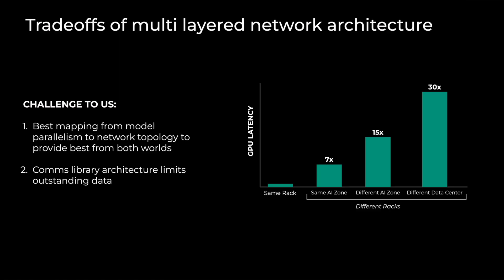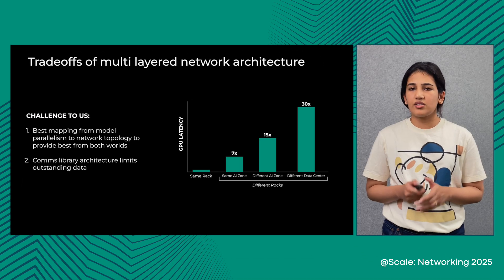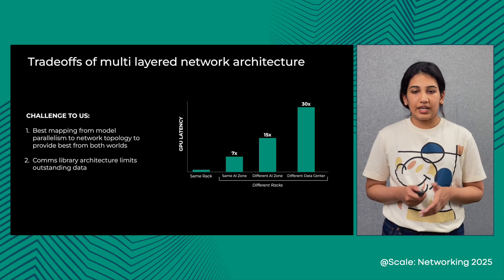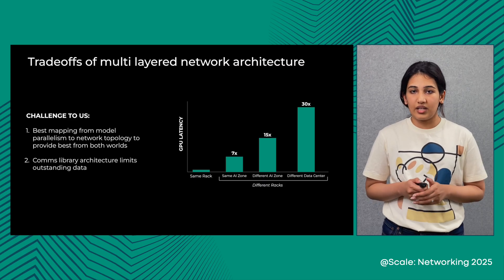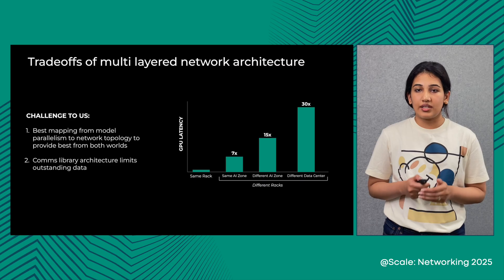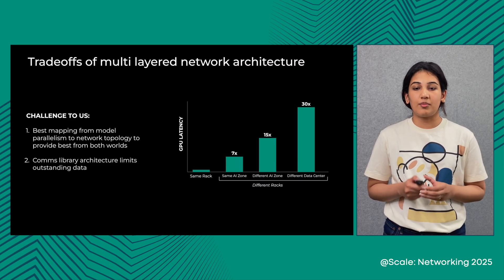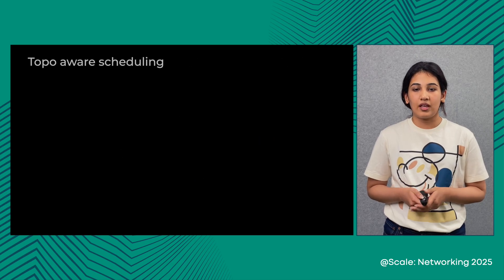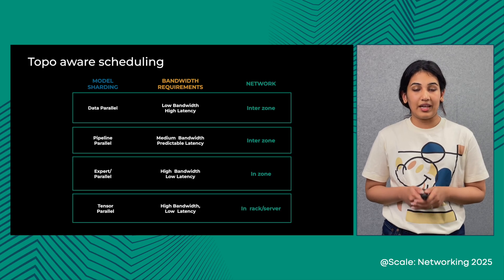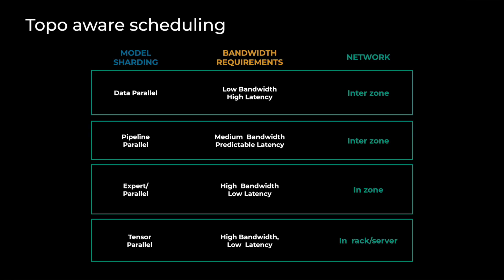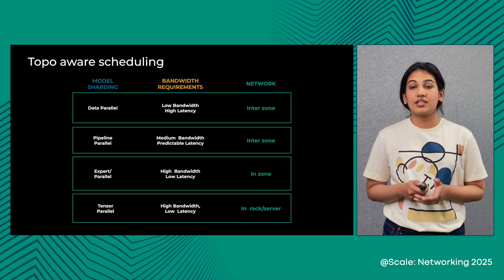This increased latency brings two challenges. First, we need to ensure that different parallelisms with different bandwidth and latency requirements map to different layers in our network — not doing this can slow down model progress. Secondly, high latency can negatively impact collective performance with the existing baseline NVIDIA NCCL implementation, because it only supports a limited amount of outstanding data in flight, which is not enough to saturate the high bandwidth-delay product of inter-building DC connections. To address the first challenge, we introduced a new scheduler feature called Balance Hierarchical Allocation, which assigns specific parallelisms to specific network layers. For example, this feature ensures that for a tensor parallel factor of 16, all 16 GPUs involved in TP communicate within the same rack. This feature is now in production for LAMA 4.